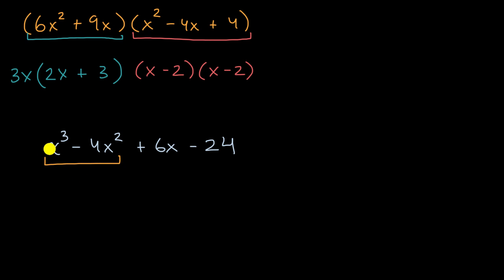Is there a common factor here? Well, yeah. Both x³ and -4x² are divisible by x². So what happens if we factor out an x²? So that's x²(x - 4).